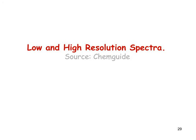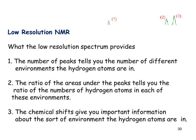Low and high resolution spectra: the low resolution spectrum gives peaks that are not split, and we can use the area under the peaks — or mathematical integration to convert the area to a line — to get relative heights. The area under the peaks, or the relative heights of the integrated lines, indicate the relative number of protons. So from low-resolution NMR we get two bits of information: the number of peaks tells us how many types of protons there are, and the relative areas tell us the ratio of protons in each environment.